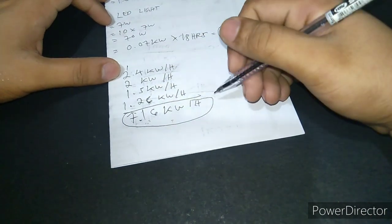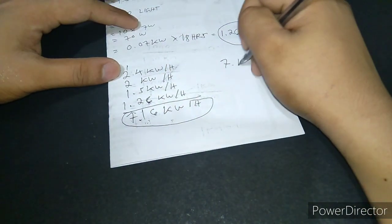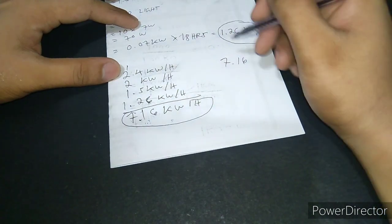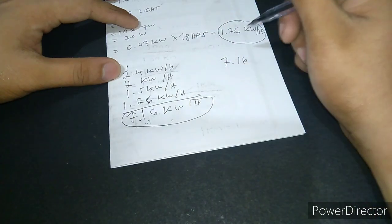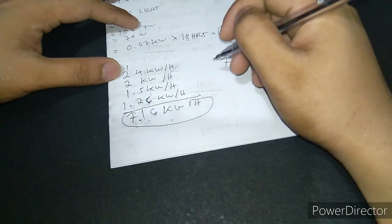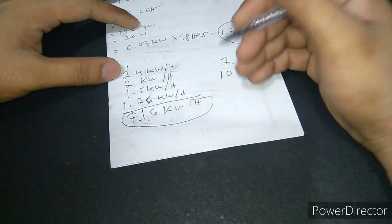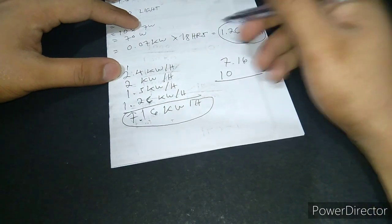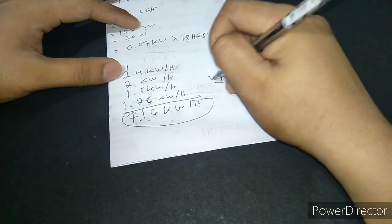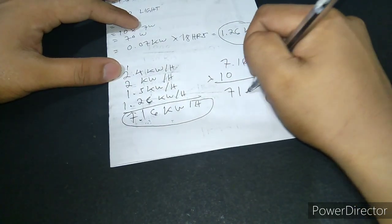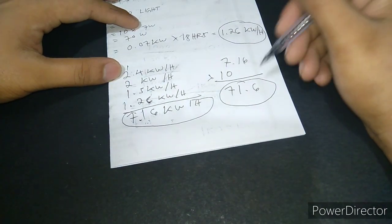If you want to know the price of this consumption, just multiply 7.16 or the sum of your power consumption by the power company's price. For example, the price is $10 each, or 10 pesos, or whatever currency wherever you are. So let's multiply it by 7.16. The result is 71.6. So that is the amount that you will pay for that day only.